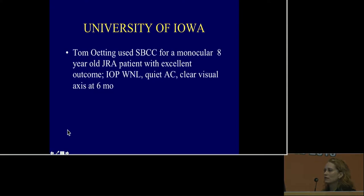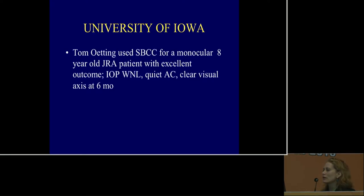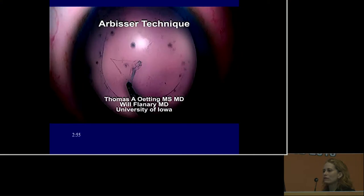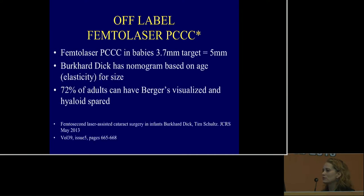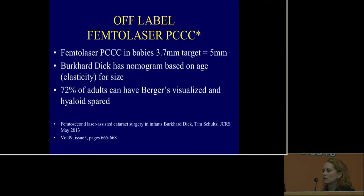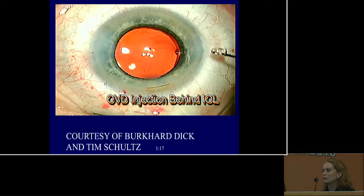Dr. Oding from Iowa also performed a case after hearing Dr. Arbisser describe this technique — the patient had JRA and would be very difficult to bring back for subsequent procedures. With this technique, he was able to achieve a very good result with clear visual access for life. The problem is that this isn't the easiest technique. Some procedures being developed may help accessibility, such as femtosecond laser for primary posterior capsulotomy — Burkhard Dick reports 72% of adults have a Berger space visualized, so the hyaloid can be spared.